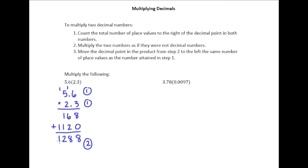In step 3 it says move the decimal point in the product from step 2, so this 1,288, to the left the same number of place values as the number attained in step 1. So here's the number attained in step 1, this 2 that we got. So what it's telling us to do is take the decimal point in 1,288 and move it to the left two places.